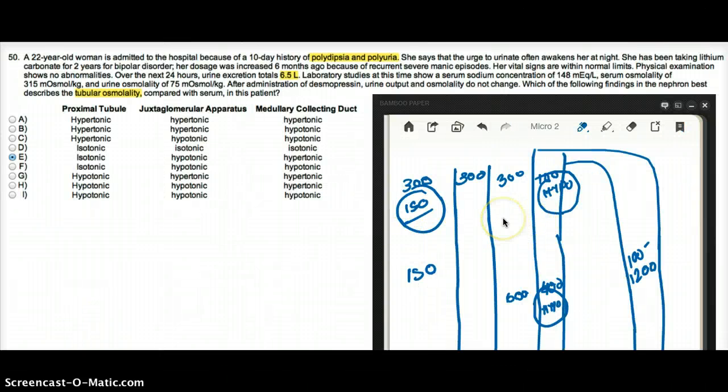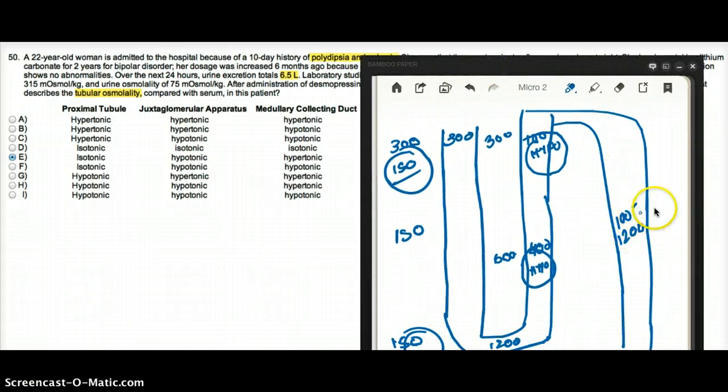But let's go back to the question. Now the question says that this patient, which of the following findings in the kidney best describes the tubular osmolarity compared with serum in this patient. Now this patient is suffering from nephrogenic diabetes insipidus. And if you read a little carefully, a little up, they said that they gave him desmopressin, but it didn't work. It did not change the urine or serum osmolarity. After administration of desmopressin, urine output and urine osmolarity do not change. So that means his collecting duct is screwed up.